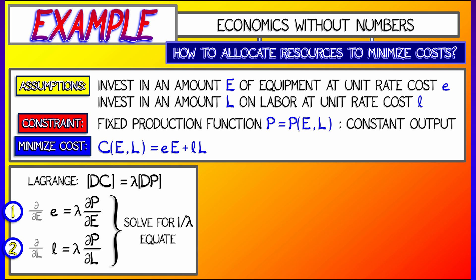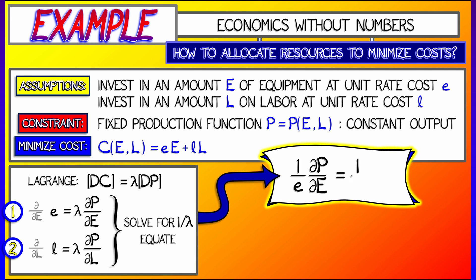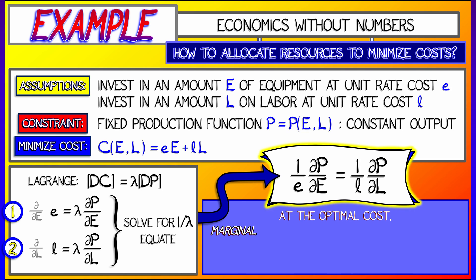Now, what we can do, take those two equations, solve for lambda, eliminate that variable, do some rearrangement, and what we get is that one over little e times DP D big E equals one over little l times DP D big L, partial derivatives in both cases. Is that it? Are we done? Yes, we're done.